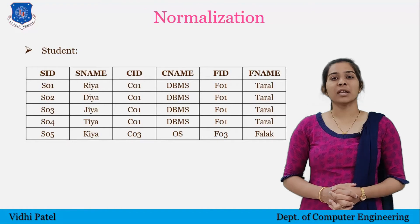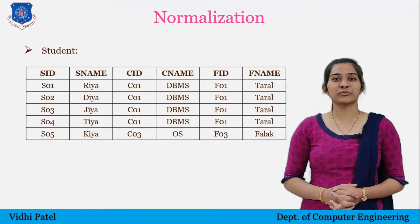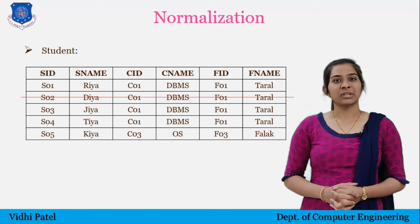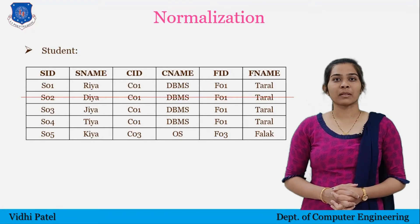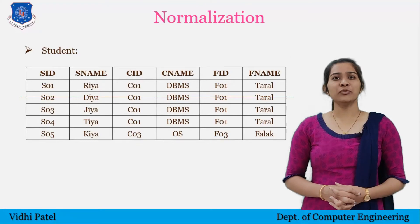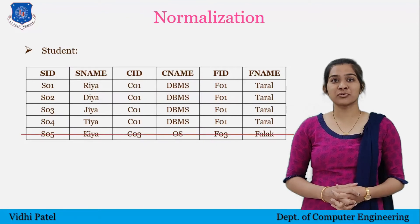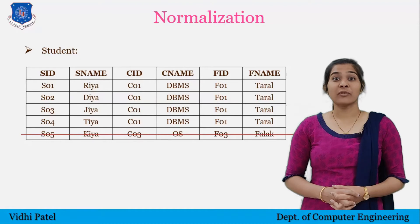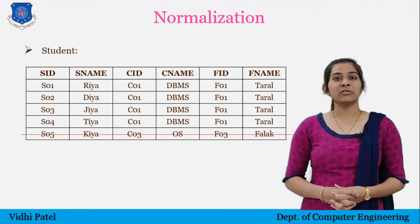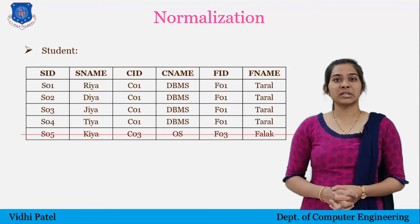Next is deletion anomaly. If I want to remove data for student ID S02, then we can delete that row — there is no problem. But if you have to delete the data of student ID S05, then who is teaching student S05? What is the name of course C03? You cannot answer because by removing the student details, the course and faculty details are also removed.